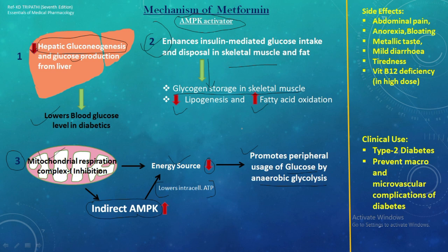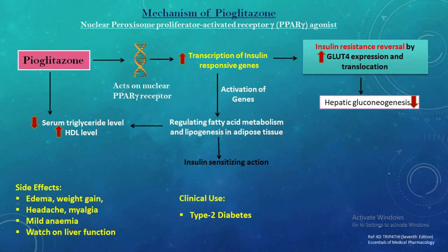Side effects of metformin include abdominal pain, anorexia, bloating, metallic taste, mild diarrhea, tiredness, and vitamin B12 deficiency at high doses. Major clinical uses are in type 2 diabetes, and the drug also helps prevent micro- and macrovascular complications of diabetes.